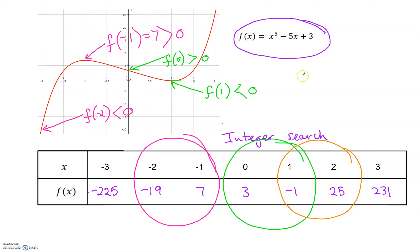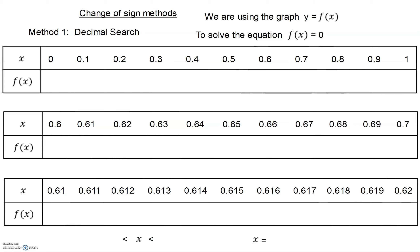We're going to look in more detail at the root in the interval (0, 1), using the same technique. If we can identify a change in sign of f of x, we know that our graph has cut the x-axis and the root must lie within that section. I've created three different tables. We're looking at the top table first — taking the interval (0, 1) and breaking it down into equal sections with 0.1 intervals. This is the first of the change of sign methods and it is called Decimal Search. I'd like you to turn your calculators on, go to the menu, choose Table, and put in the expression x to the power 5 minus 5x plus 3.